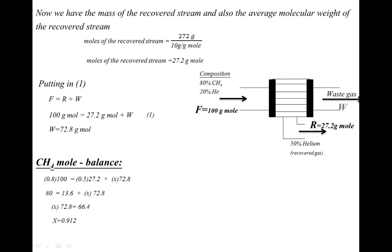Now we find the helium composition in the waste stream. Since there are only two components, methane and helium, and the sum of all mole fractions must equal one, the helium mole fraction = 1 − 0.912 = 0.088. Alternatively, we can verify this using a helium component balance.